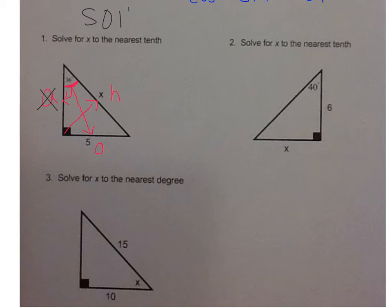So now think of SOHCAHTOA. Which function, sine, cosine, or tangent, uses O and H? That would be sine, uses O and H. So we're going to set it up. Sine, and then your angle goes right next to the function. 36 is equal to O over H, which is 5 over x.